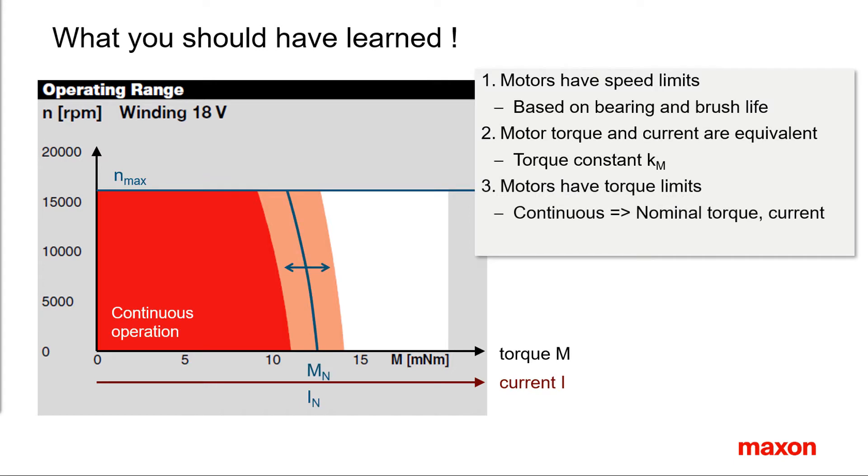Motors have torque limits. The continuous torque limit is given by the nominal torque or nominal current. Motors can be overloaded for a limited time depending on the amount of torque.